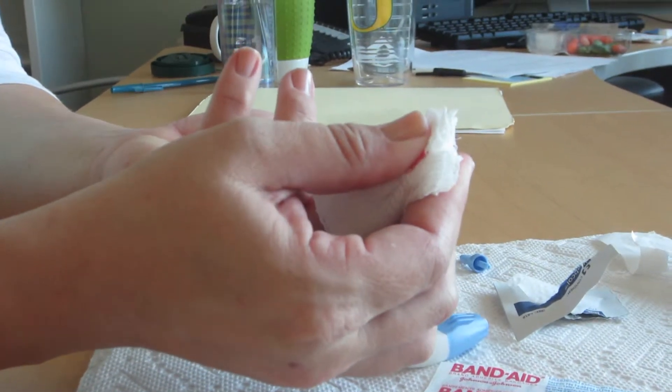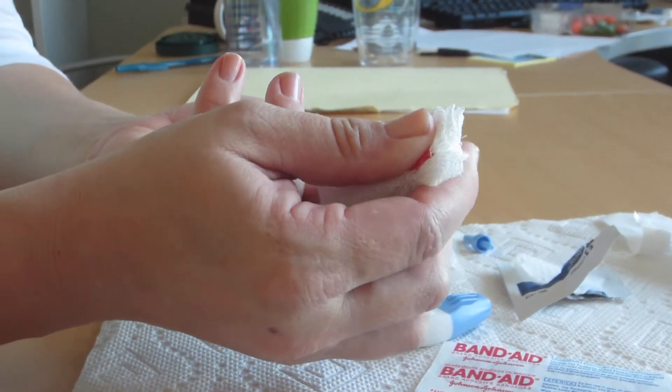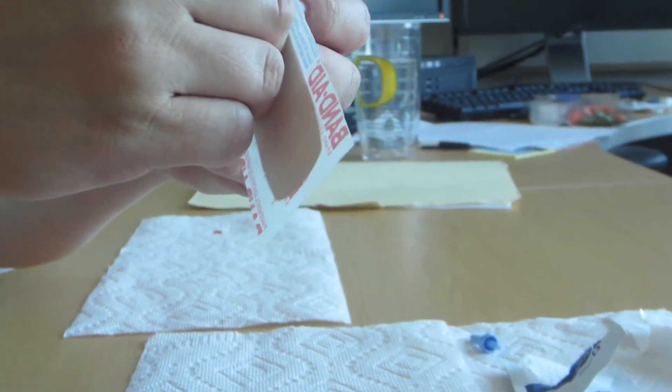When finished with the sample, place a gauze pad on the pricked finger and apply pressure to stop any bleeding. Once bleeding has slowed, place a band-aid on the pricked finger.